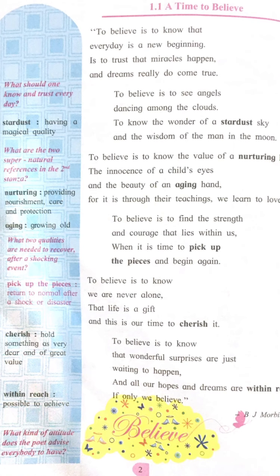Turn the page and look at page number two. Poem number 1.1, 'A Time to Believe,' is written by B.J. Morbitzer. Belief means to have faith, to trust. The title of the poem means we must believe in ourselves. This poem is an inspirational one.